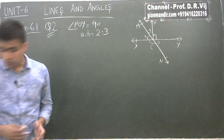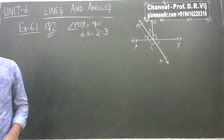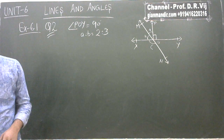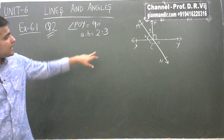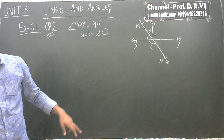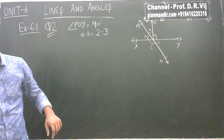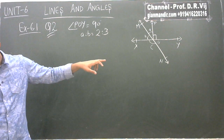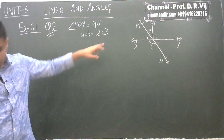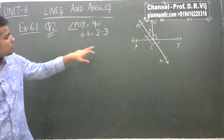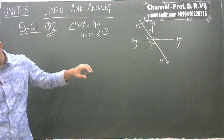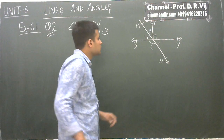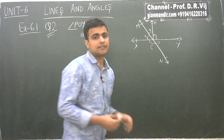Question number 2 says: in figure 6.14, I have drawn it on the blackboard, lines XY and MN intersect at O. If angle POY is 90 degrees and a ratio b is 2 ratio 3, then find angle C.